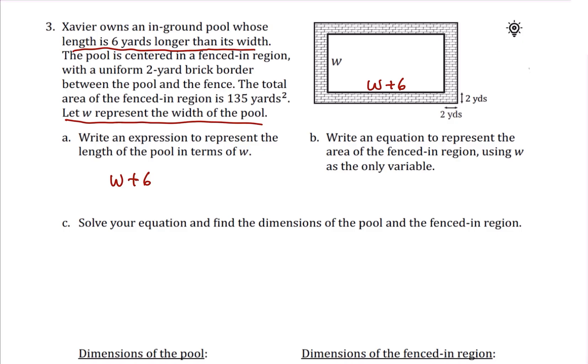Now what we have to start with for part B is that we need an equation to represent the area. We know that the area of the fenced-in region is going to be different than the area of the pool because the fenced-in area goes all the way around this outside. So we need to add some numbers in order to get that area. Since each one of the places where there's a border, the border is two yards. So we know that the length right here of the entire fenced-in area is going to be the length of the pool W plus six plus two over here plus two over here. So it's going to be W plus six plus four because we have to add two feet here and two feet here.